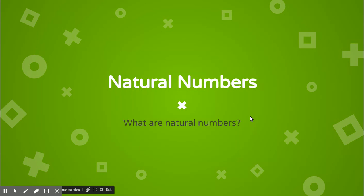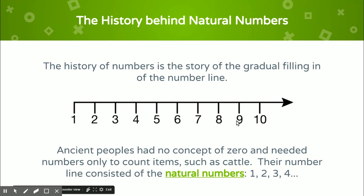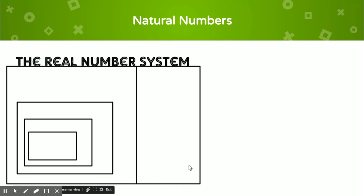First, let's talk about natural numbers. What are natural numbers? A little history: the history of numbers is the story of the gradual filling in of the number line. Ancient people had no concept of the number zero. What they only needed numbers for was to count items such as cattle, which is why they only needed natural numbers. Natural numbers are numbers that you can count, which is why we refer to them as counting numbers.